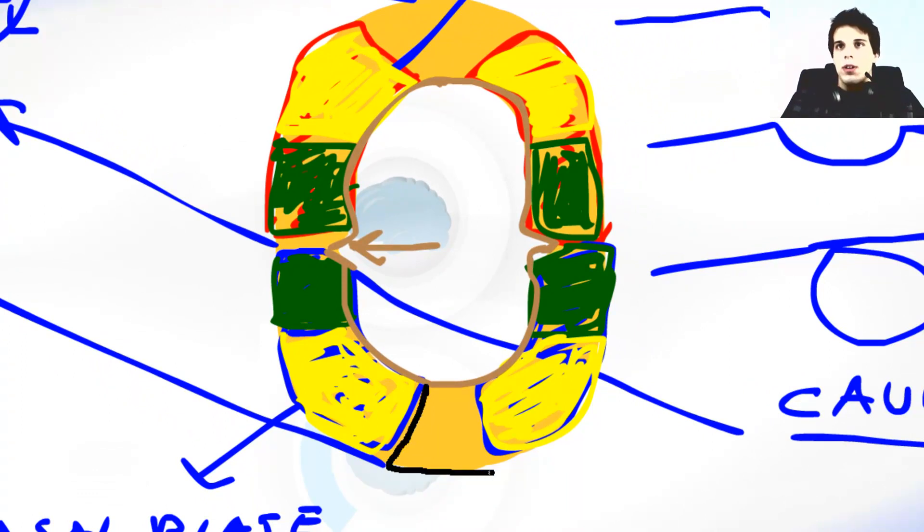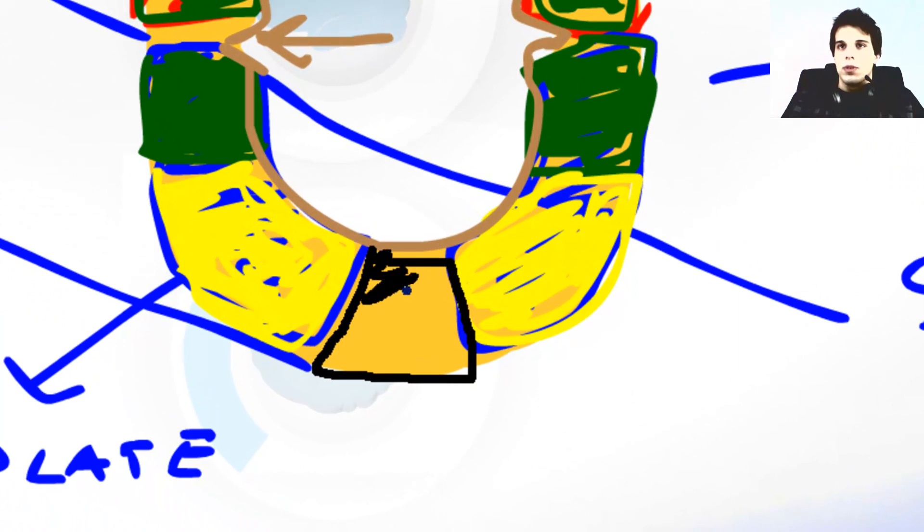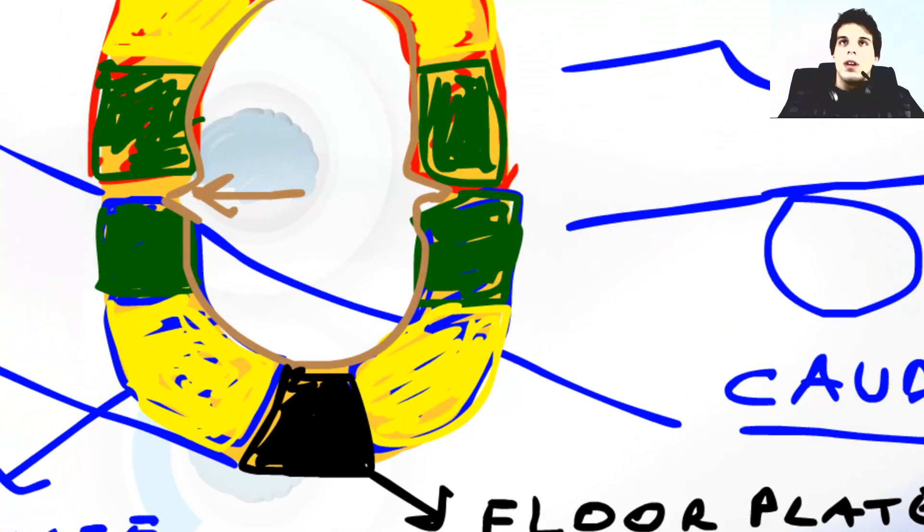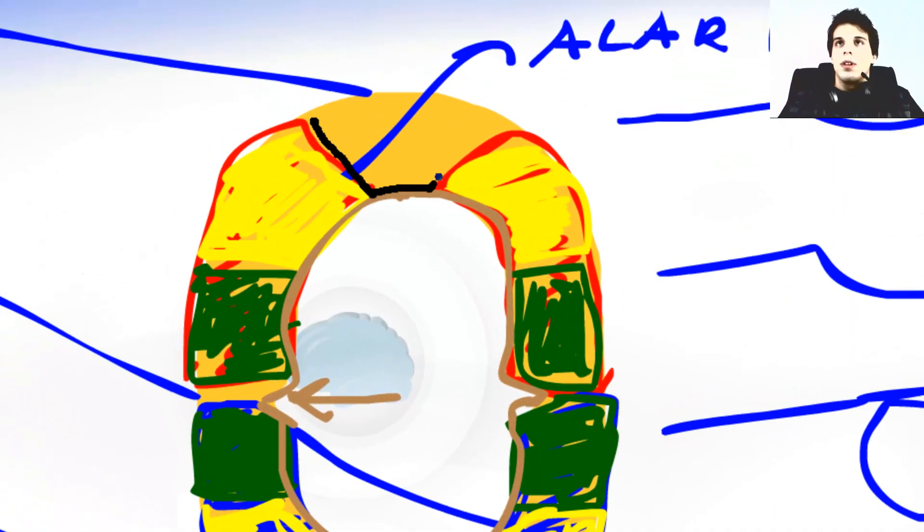This part over here on the ventral side of the neural tube is floor plate. It serves as a guide for positioning of the neural tube. So this is the floor plate. And this part over here, the dorsal part of the neural tube is called the roof plate.